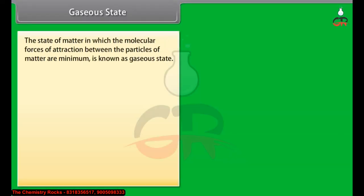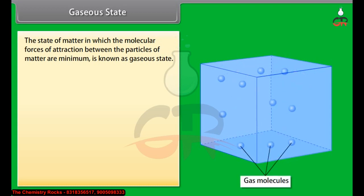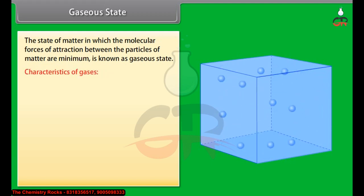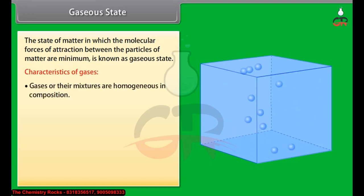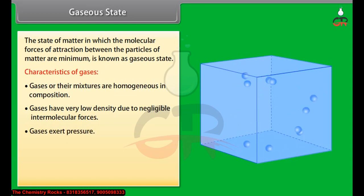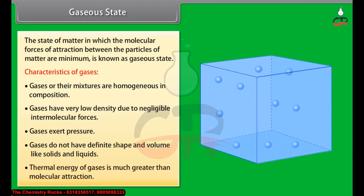Gaseous state: The state of matter in which the molecular forces of attraction between the particles of matter are minimum is known as the gaseous state. Gases completely fill the container that holds them. Characteristics of gases: Gases or their mixtures are homogeneous in composition. Gases have very low density due to negligible intermolecular forces. Gases exert pressure. Gases do not have a definite shape and volume like solids and liquids. The thermal energy of gases is much greater than molecular attraction.